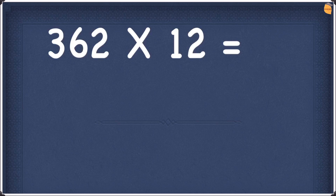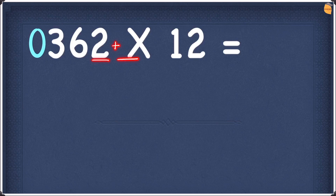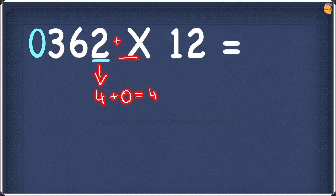Our next example is 362 times 12. Again, we're going to do the same thing — add a 0 in front of the 362. Then we double each digit and add it to the digit on the right hand side. Doubling 2 is obviously 4. We don't have any number on the right hand side, so it's just 4. Write this 4.